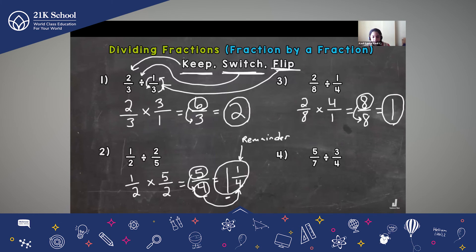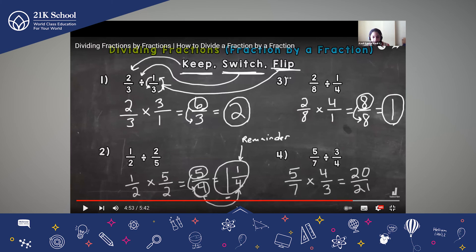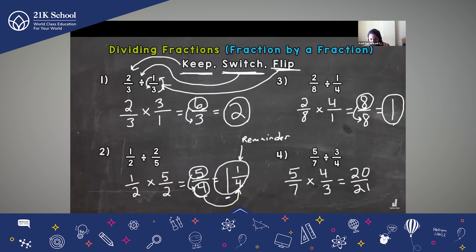Number four: five sevenths divided by three fourths. Steps — Keep, Switch, Flip. Five times four is 20, and seven times three is 21. That's a proper fraction. The greatest common factor between 20 and 21 is one, so this fraction is already simplified. We are done — 20 over 21.